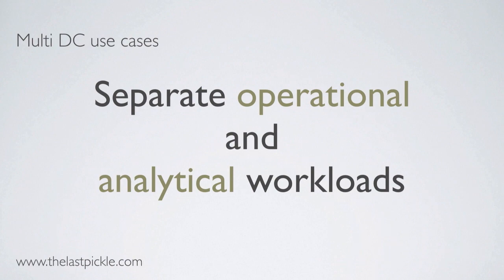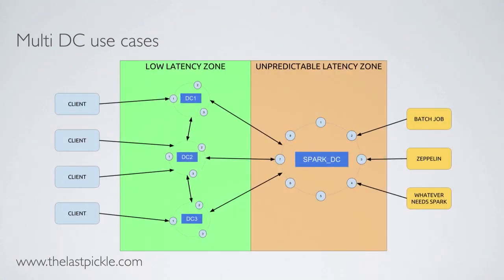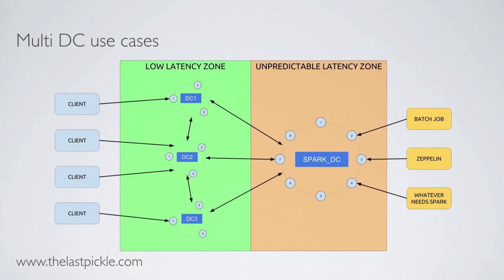Another use case would be to separate operational and analytical workload. If you're familiar with Spark, you know that querying Cassandra with Spark will mostly read all of the data of your tables. That's very IO intensive and CPU intensive, and you get unpredictable latencies, which is no fit for operational applications who need to meet low latency SLAs.